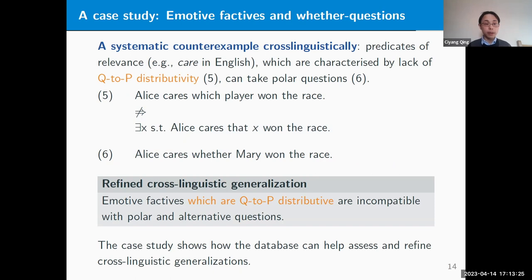Using our database, we found that there is a systematic counterexample cross-linguistically, which is basically the predicates of relevance such as 'care' in English and its translational equivalents. This predicate is characterized by the lack of Q2P distributivity. For example, 'Alice cares which player won the race' does not entail that there's a person such that Alice cares that that particular person won the race.